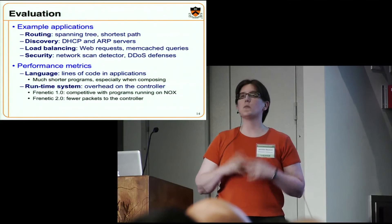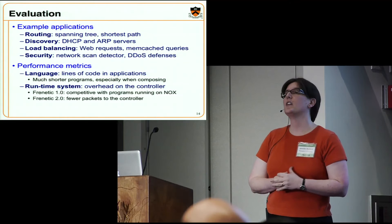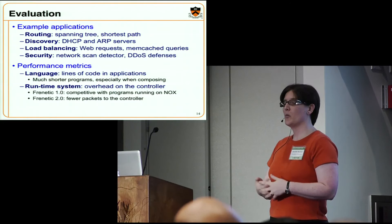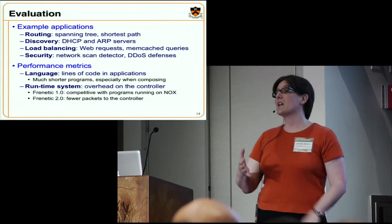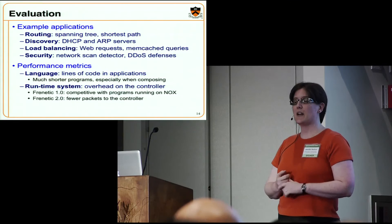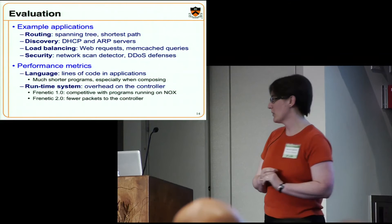We've written a bunch of applications on top of Frenetic — standard hello world things like spanning tree, shortest path routing, discovery protocols, a web server load balancer, a router for memcached queries useful in the data center for distributed storage, and a number of security applications. We've done all sorts of compositions of these programs. Our goal was to understand how concise the programs are — a rough measure of ease of programming. The programs are a lot shorter, and dramatically shorter when you compose them because composition is just A plus B plus C — the number of lines is additive. Performance is competitive with programs running on top of NOX, sometimes a little slower, sometimes a little faster. With version 2.0, we expect it to be a lot faster since fewer packets will go to the controller.